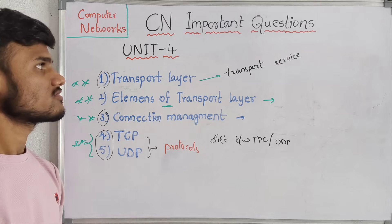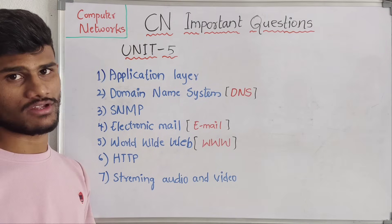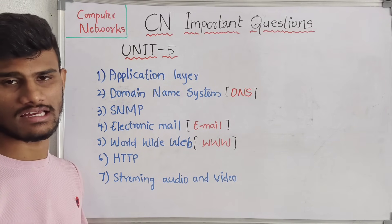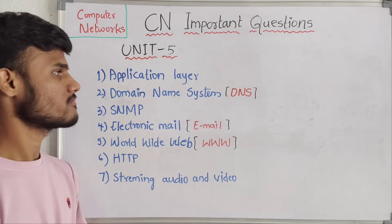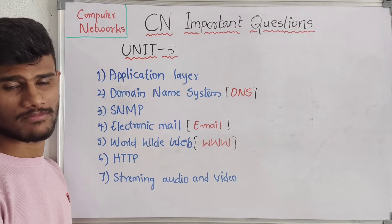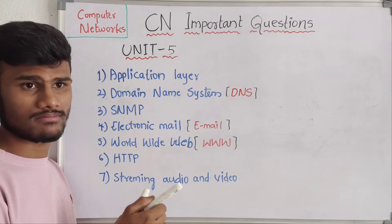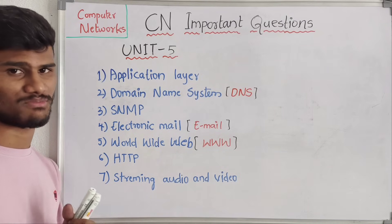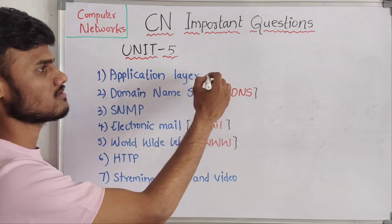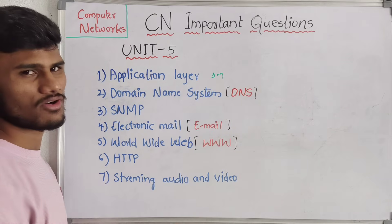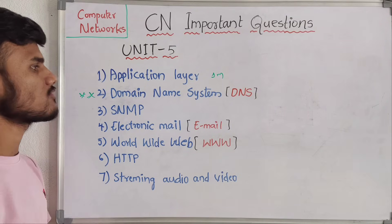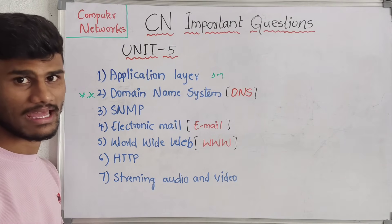So this is all about the fourth unit. Now coming to the fifth unit — this is the last unit. This last unit is completely about the application layer. The first question is: what are the basic concepts of the application layer? What is meant by the application layer? Explain the functionality of the application layer — maximum one or two marks question, a simple definition.